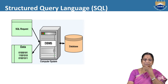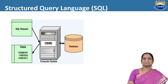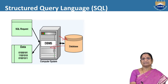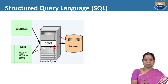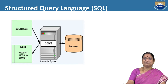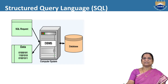This is how SQL queries are executed. The user makes an SQL request to the database management system. In turn, the DBMS interacts with the database, retrieves the data, and that data is displayed back to the user. The DBMS software resides in our system, and the database is stored in non-volatile storage devices from which data is accessed through the DBMS software.